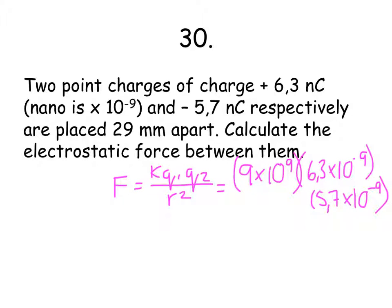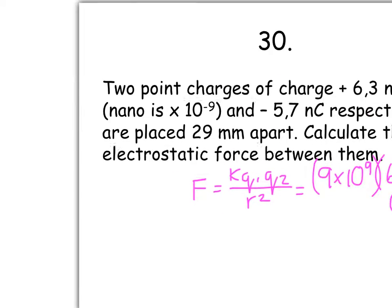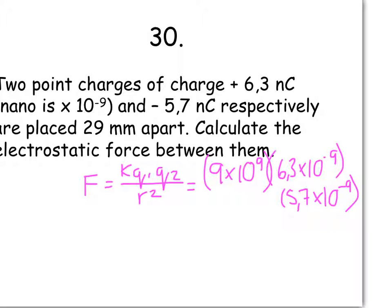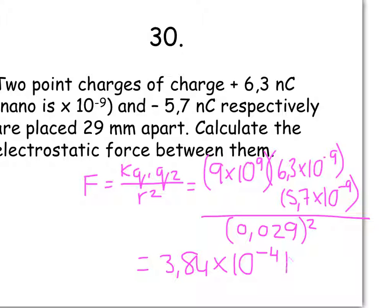Don't really have to worry about the positive and negative signs, because all that this positive and negative tell me is that in the end, my force is going to be attractive. And then I divide that whole value by 0.029, and again I do not forget to square my denominator, and I land up with 3.84 times 10 to the negative 4 newtons.